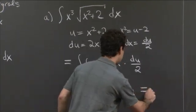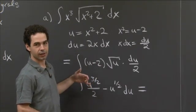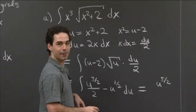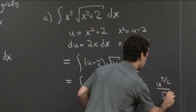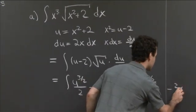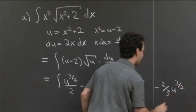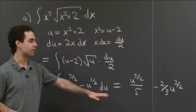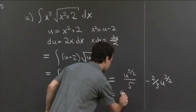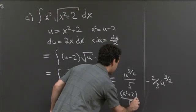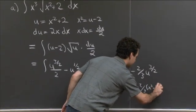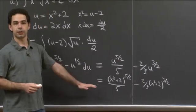Just this regular substitution worked nicely. So we get u to the 3/2, and computing the antiderivative gives us u to the 5/2. Dividing by 5/2 means multiplying by 2/5, and we have that factor of a half, so it's u to the 5/2 over 5 minus — and u to the 1/2 integrates to give us 2/3 u to the 3/2. Now to finish off, we do our final back substitution and replace u with x: that gives us x squared plus 2 to the 5/2 over 5 minus 2/3 times x squared plus 2 to the 3/2, plus a constant.